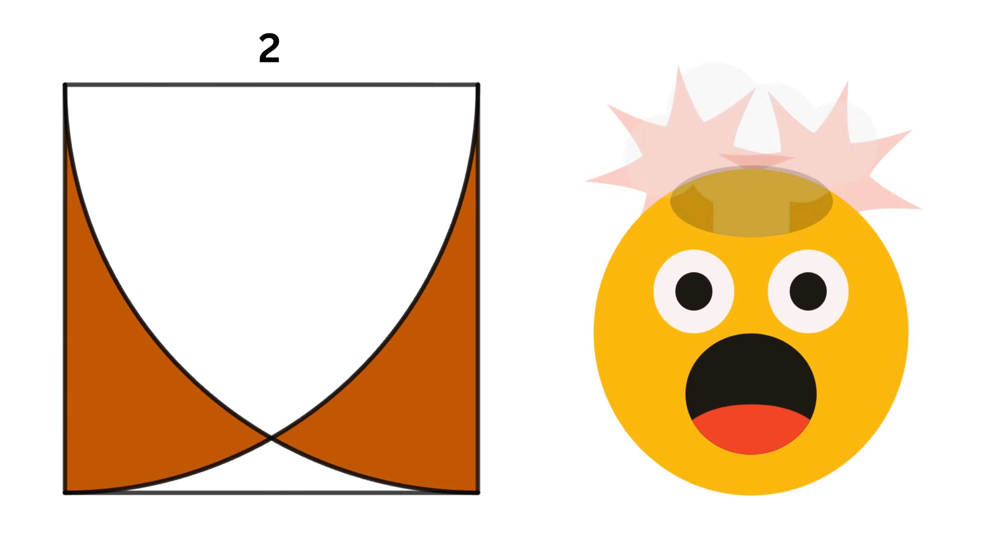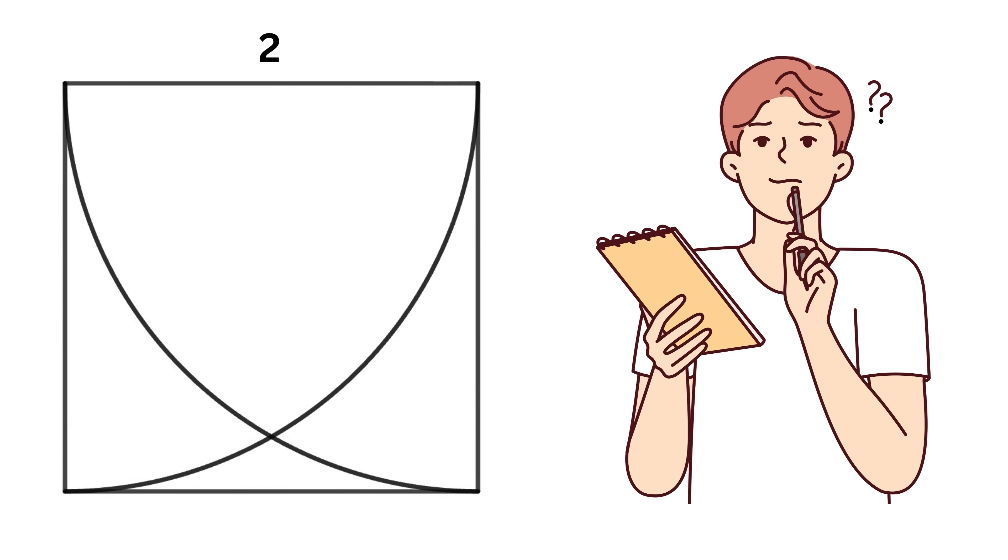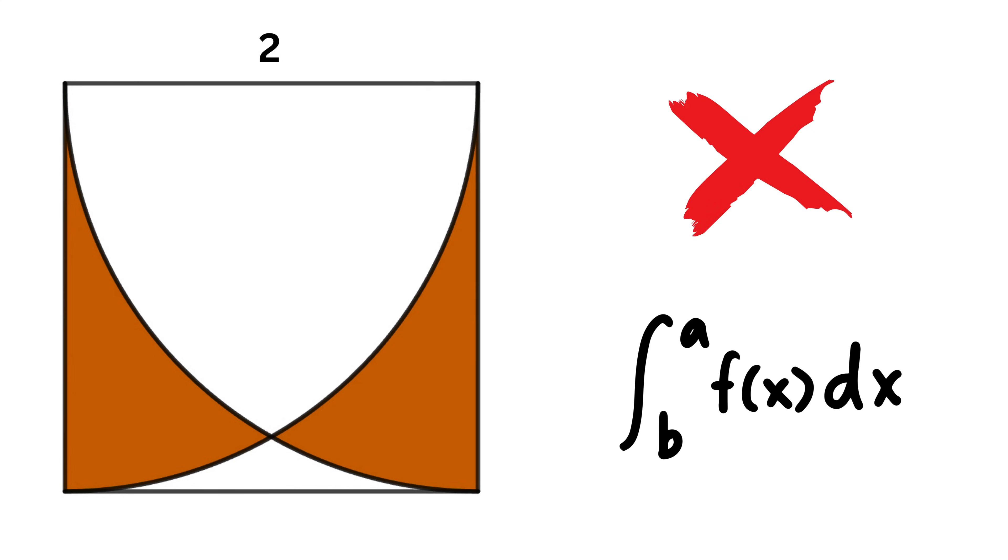Ready to blow your mind? We have a square of side length 2 units inside which we have inscribed two quarter circles, such that one quarter circle has its center at the top left corner and the other quarter circle has its center at the top right corner. Our job is to find the area of this shaded region.